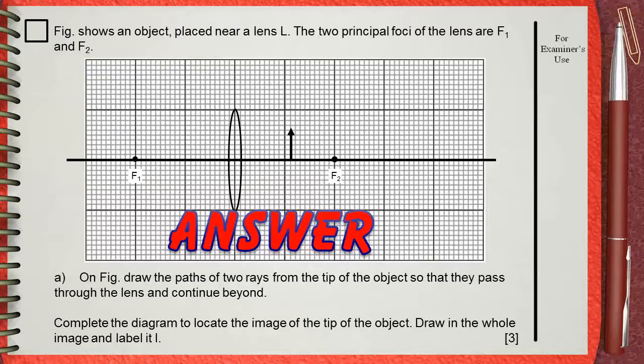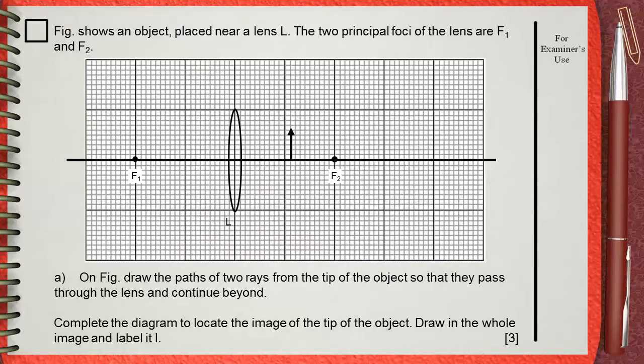When the object that is represented by the black arrow is placed between the lens and the focus, the diagram becomes a little special. To find the image of this object,